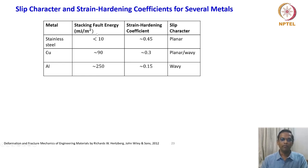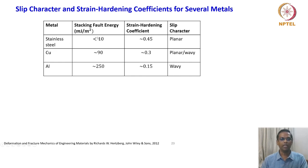The stacking fault energy plays an important role in determining the deformation characteristics of polycrystalline material. This is a fundamental property or characteristic of each material. If you take the stacking fault energy, by just looking at the values, you will be able to predict some kind of dislocation activity. Stainless steel, which has a stacking fault energy less than 10 millijoules per meter square, has a strain hardening coefficient of 0.45.